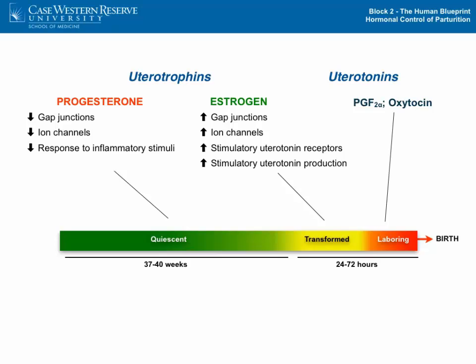The process of parturition is controlled by hormones, and these hormones can be divided into two types: uterotropins that affect the growth and function of the uterus, and uterotonins that affect the muscular tone and contractile state of the uterus and stimulate contractions directly. The key uterotropins are the steroid hormones progesterone and estrogen.